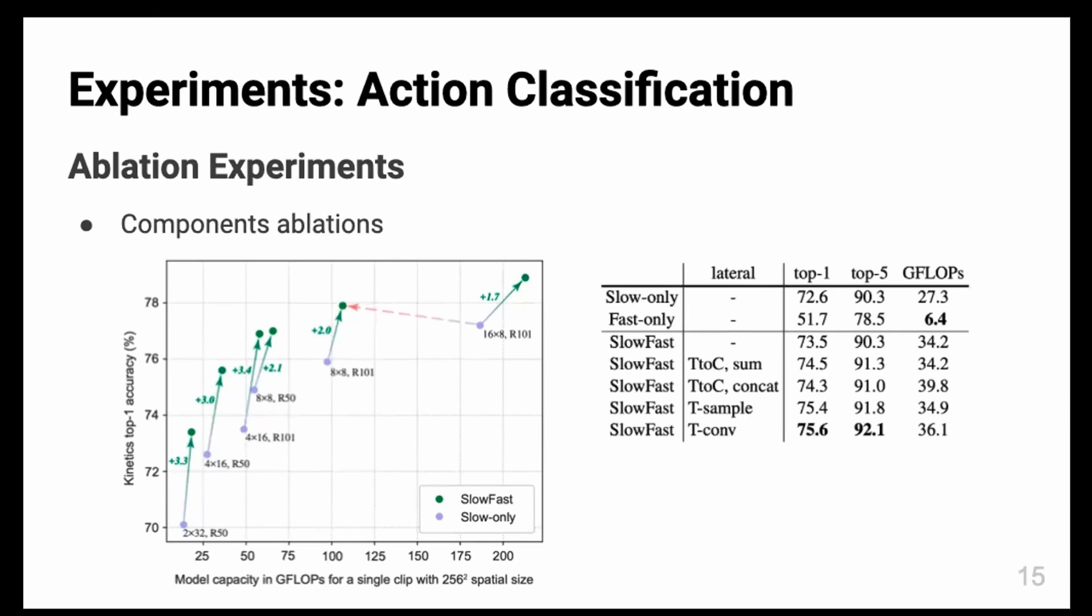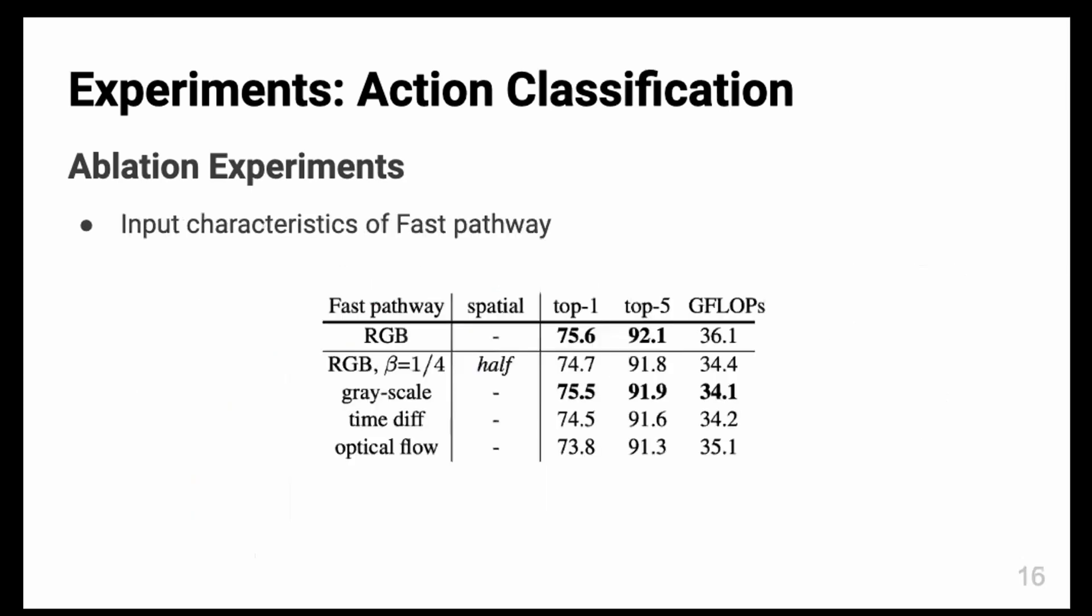The thing to notice here is when we use the fast pathway only, the computation cost is very small and it does not achieve good performance when it is used alone. But it can be used as a complementary component to the slow pathway.